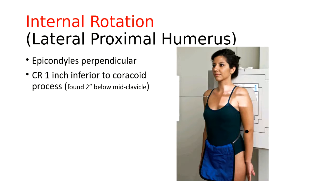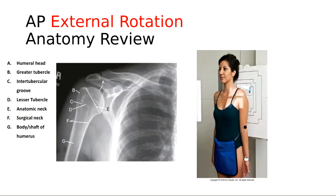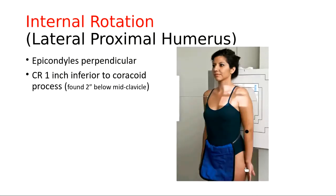From the external rotation, the patient's hand was supinated. For the internal rotation, all the patient does is turn their hand so the top of the hand is against the back of their thigh — they internally rotate the arm to place the top of the hand against their thigh.